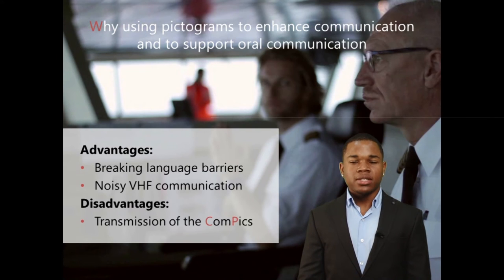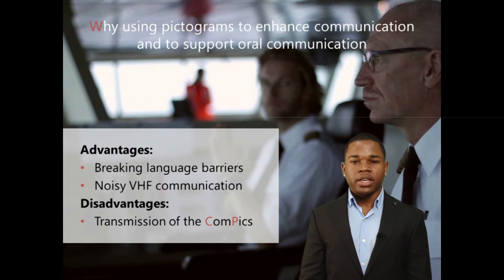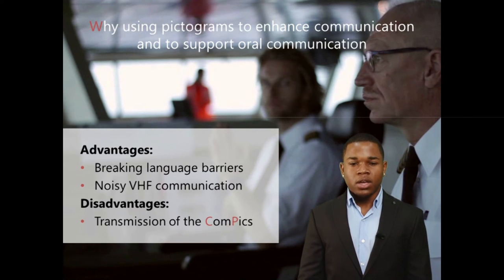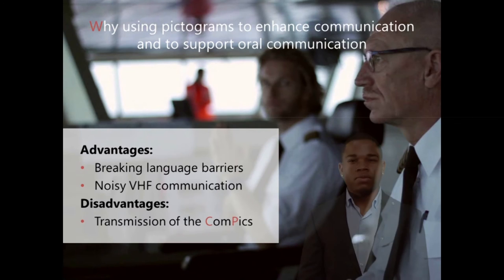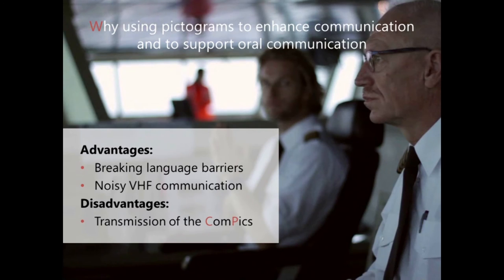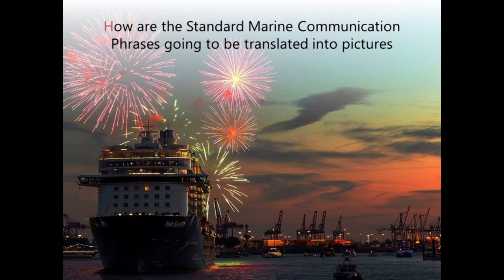This system also has its disadvantages. The transmission of these pictograms will be done through the AIS system, which works on VHF. This means that you have to be within VHF range to transmit a pictogram, which is a range of about 40 nautical miles.